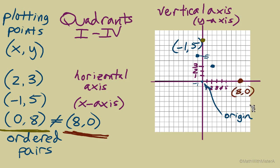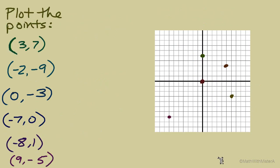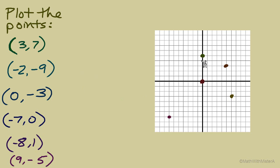Let's go through a few examples of plotting points that you can try, and then we'll check the answers together. Here's the problem: pause the video and try it. There are 6 ordered pairs to plot and 5 points that need their ordered pair identified — 6 different ordered pairs to plot, which are different from these points. Figure out what ordered pair each point represents, then restart and we'll go through the answers together.